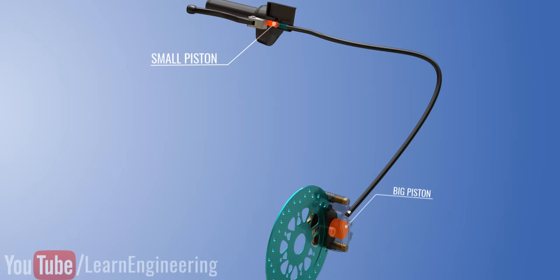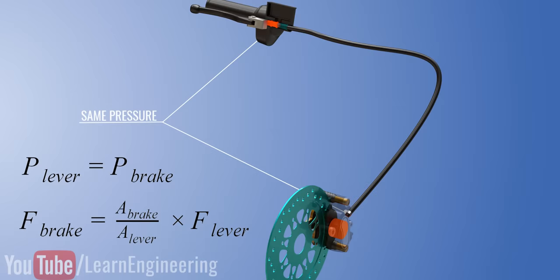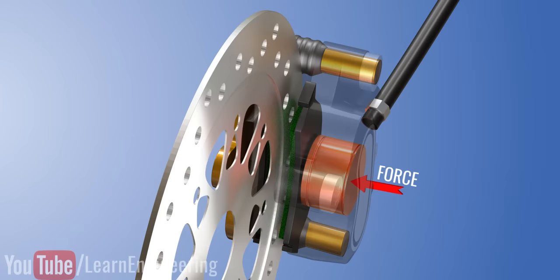According to Pascal's Law, the pressure at both of the pistons should be equal. This means that the force you applied to the lever end will be multiplied many times at the brake pad end due to the difference in the area of the pistons. This force will move the brake pad and press it against the brake disc, thus bringing the wheel to a stop.